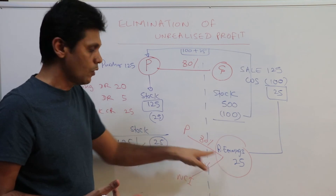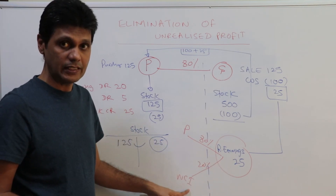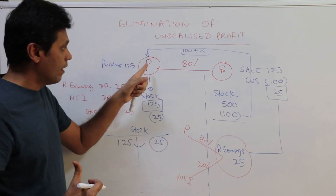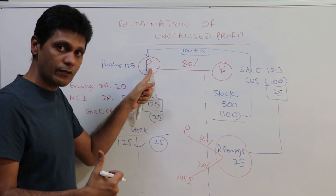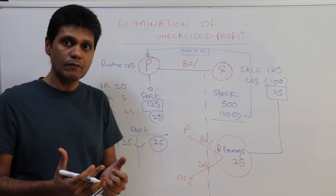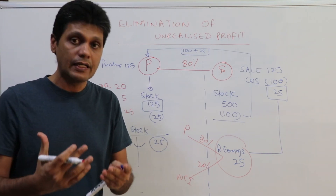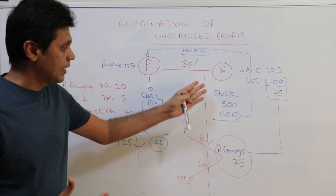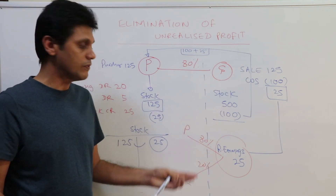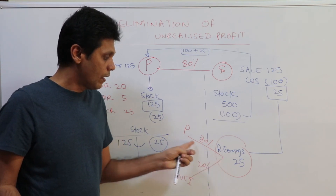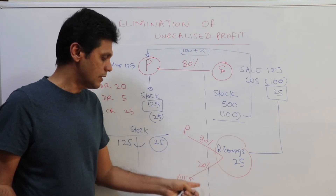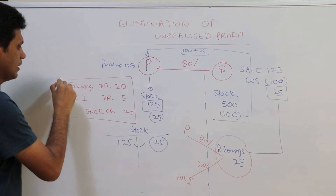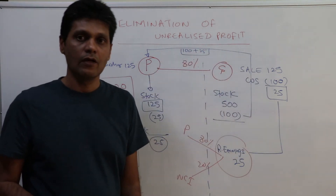This profit belongs to parent as well as non-controlling interest because it was recorded by the subsidiary company. However, as I explained in my previous session, if the profit is recognized and recorded by the parent company, then the entire amount of unrealized profit has to be removed from the retained earnings of the parent company, because the parent company owns the entire profit. Here, the subsidiary's profit is owned by two parties — the parent and NCI — so we allocate 80% to parent and 20% to NCI. This is the journal entry you need to pass when preparing the group financial statement.